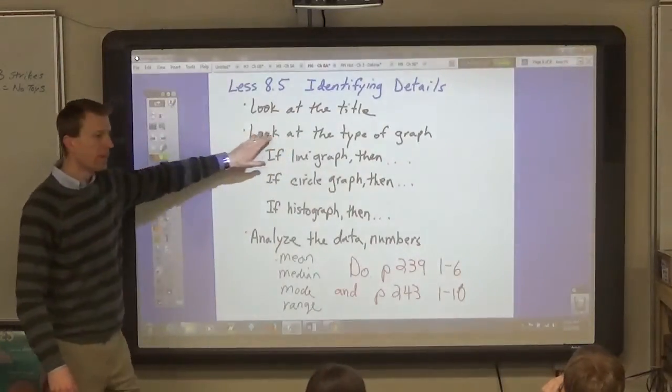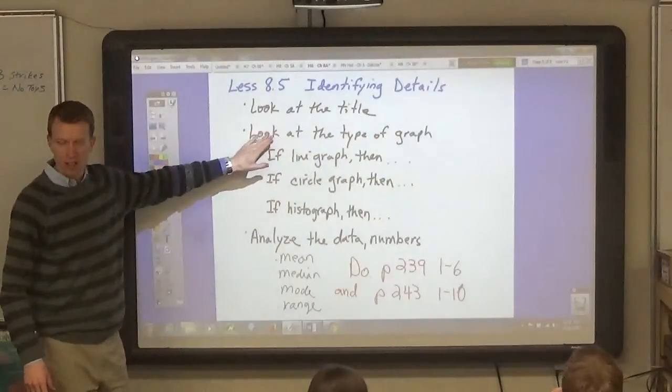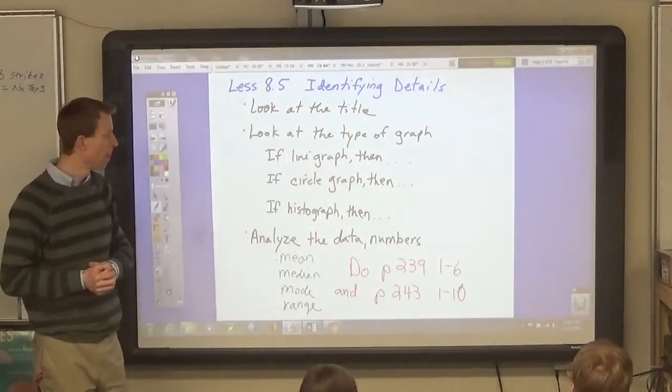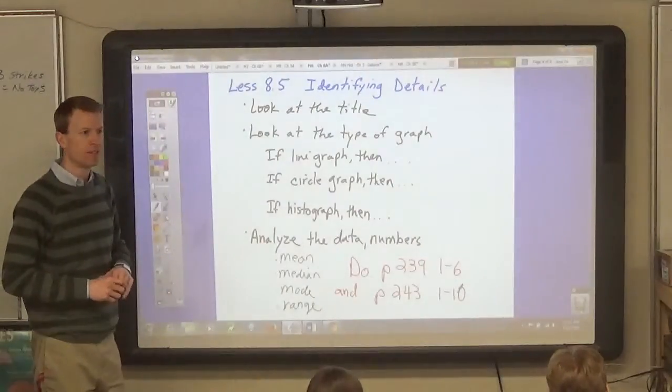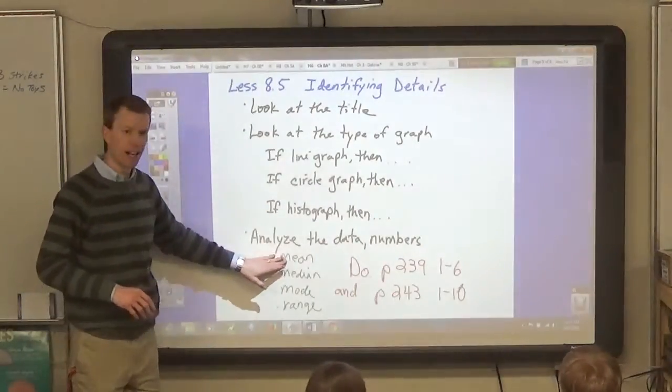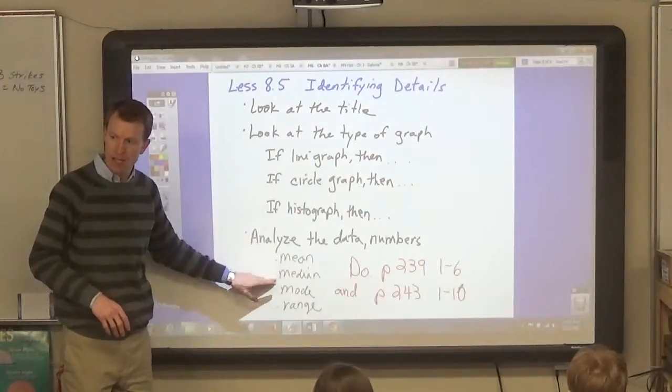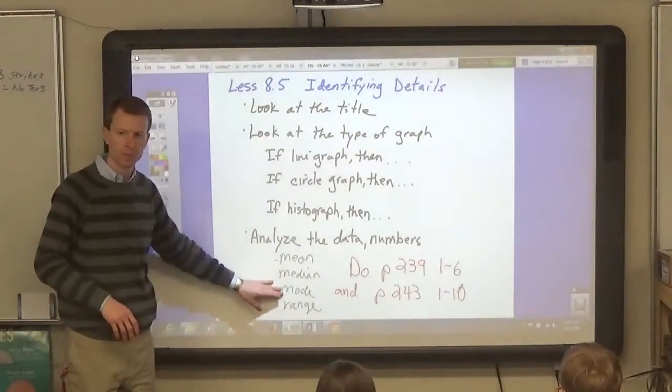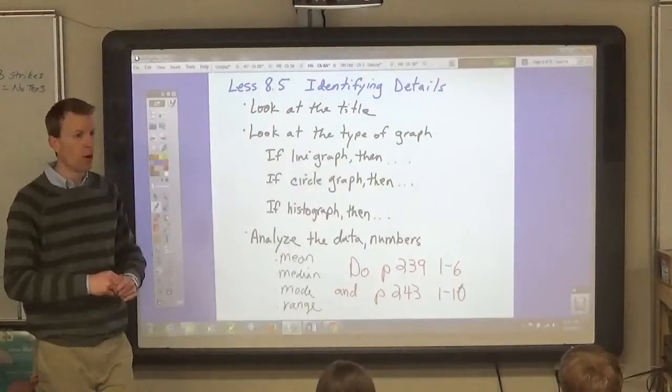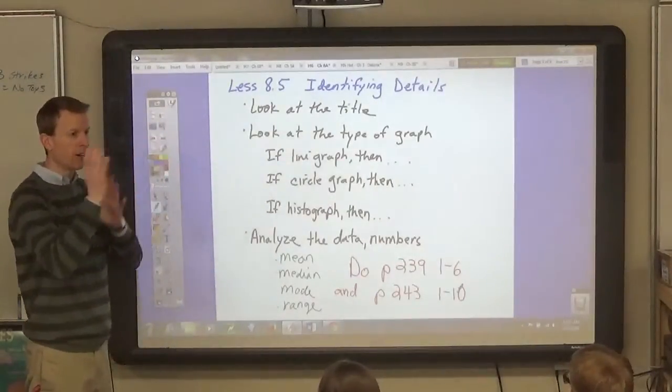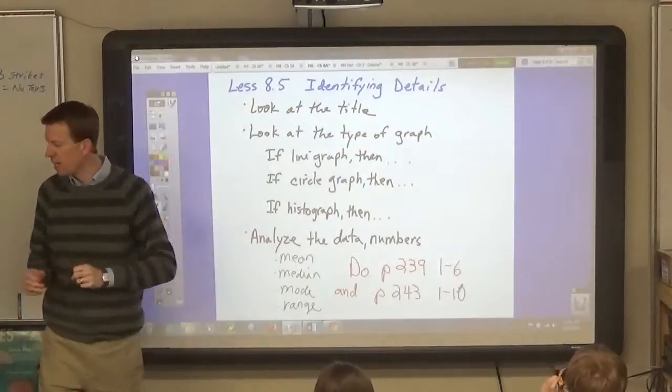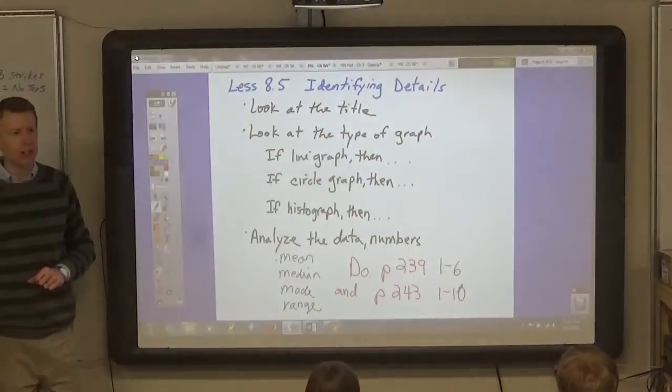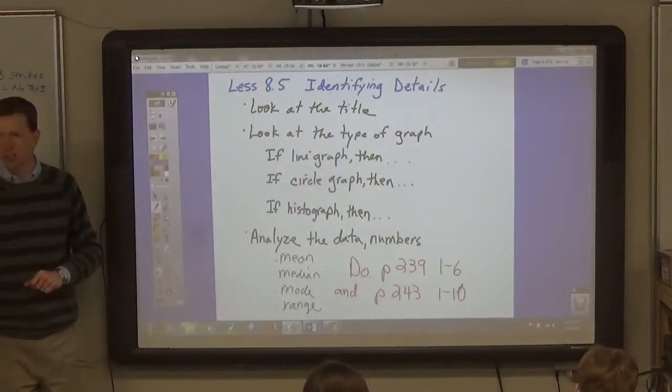That's why you want to look at the type of graph. You know that you're supposed to look at this graph and compare all of the different subjects. Then analyze the data. In this case it says, look at the data on the table and the graph. What conclusion can you draw about the reaction times of the students?